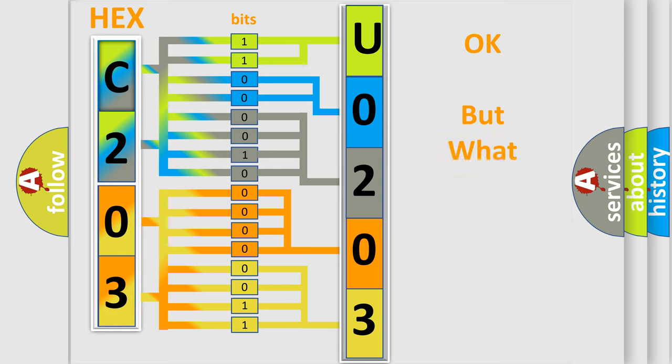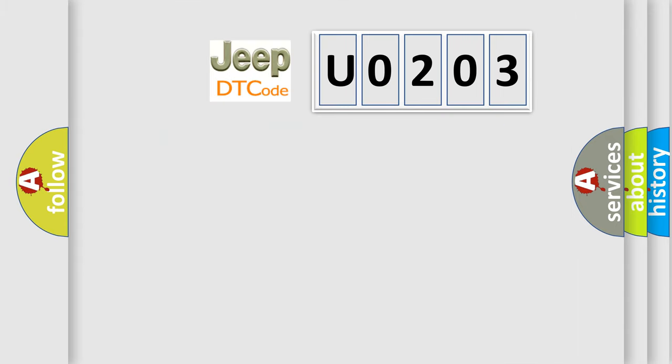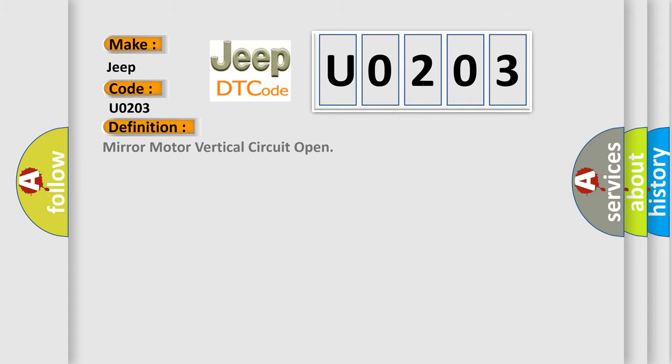The number itself does not make sense to us if we cannot assign information about what it actually expresses. So, what does the Diagnostic Trouble Code U0203 interpret specifically for Jeep car manufacturers? The basic definition is Mirror motor vertical circuit open.